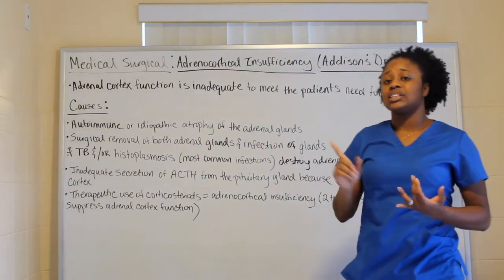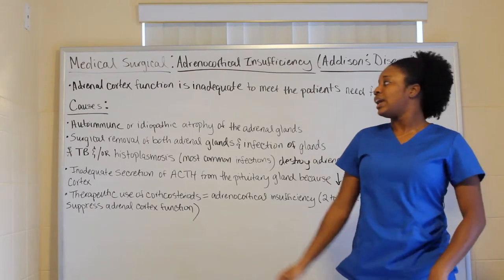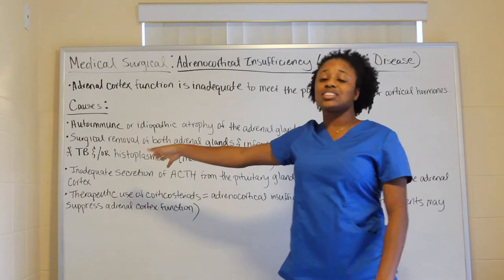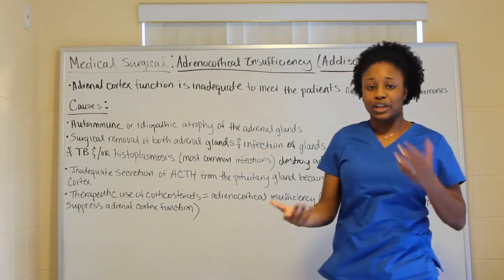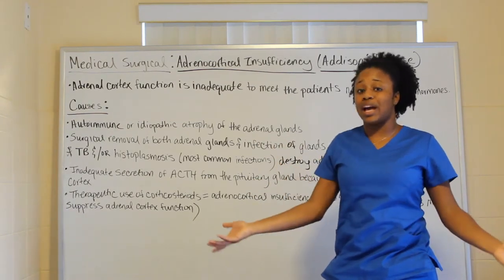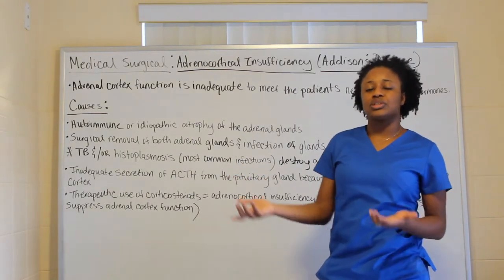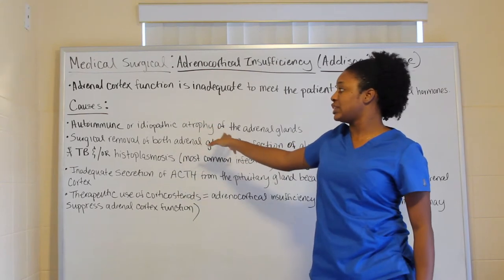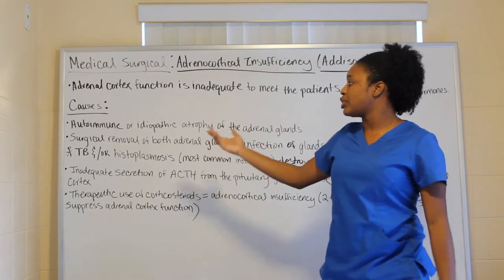The causes can include autoimmune or idiopathic atrophy of the adrenal glands. When you hear the word idiopathic, think 'idiot' plus 'pathic' — pretty much meaning we don't know the pathology; it's something that happens and they don't know the reason why. Those are the two things you mainly see in most cases.